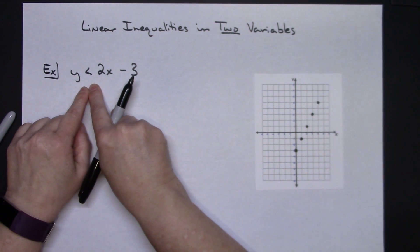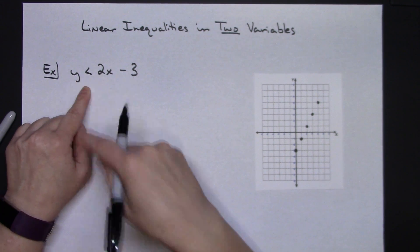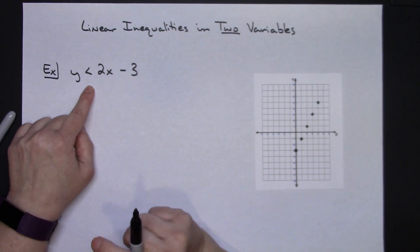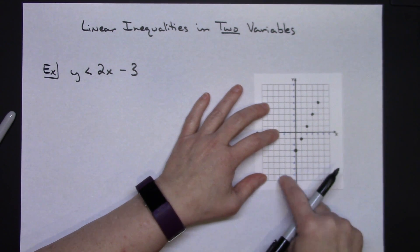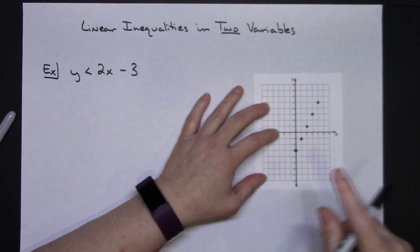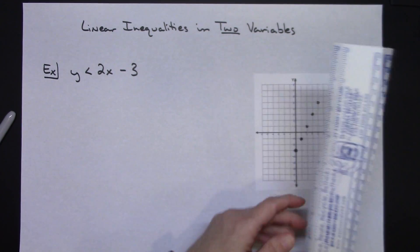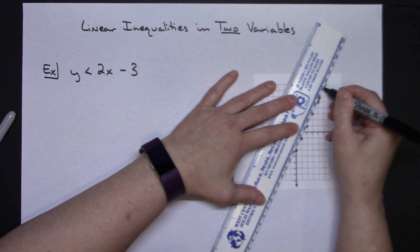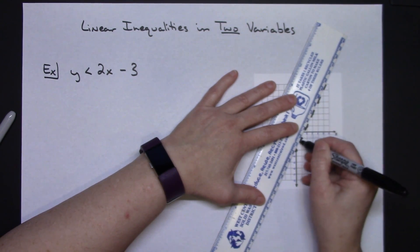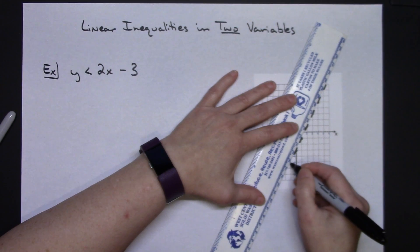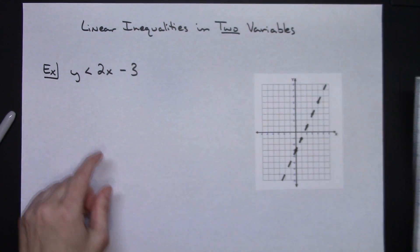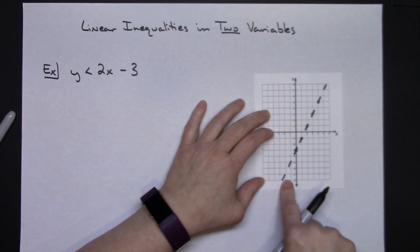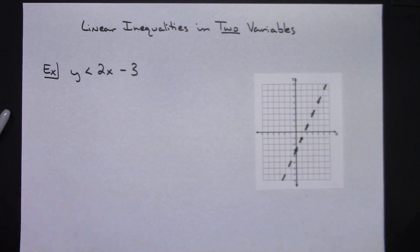Because I have a less than symbol, and less than or greater than means points are not included, the points that fall on this line will not make the inequality true. So I connect the points with a dotted line. If it were less than or equal to or greater than or equal to, I would use a solid line to include those points.